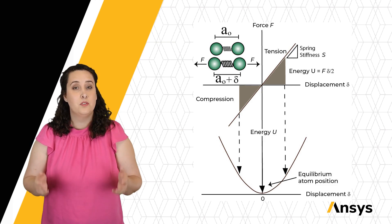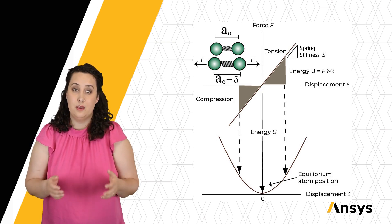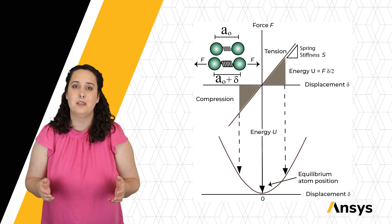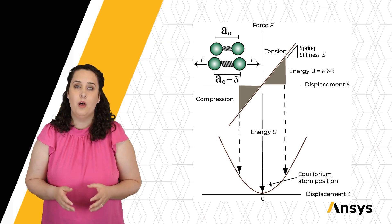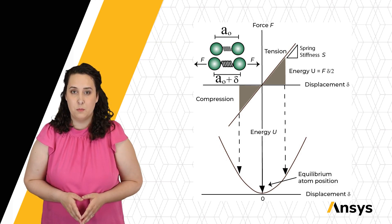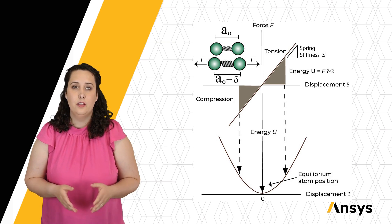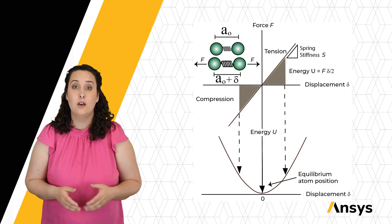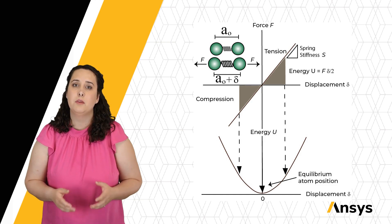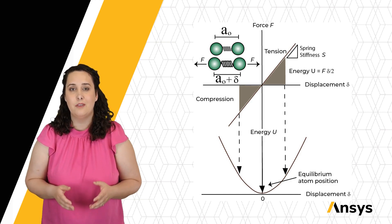Now, if I apply some small tensile force, we can see that my atoms are displaced by some distance delta. We can plot this on a force versus displacement curve and see that for some displacement delta caused by some force F, my spring will have a stiffness of S.